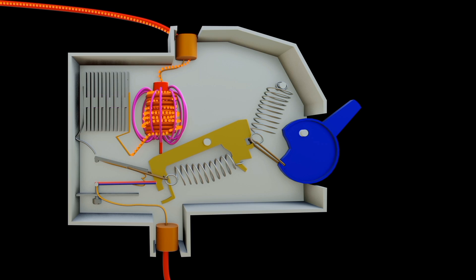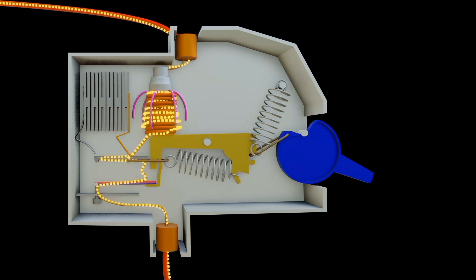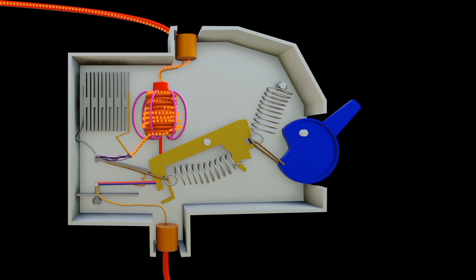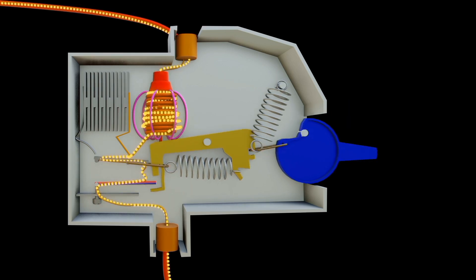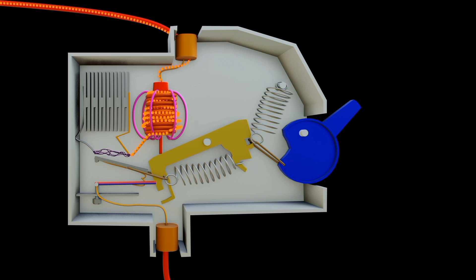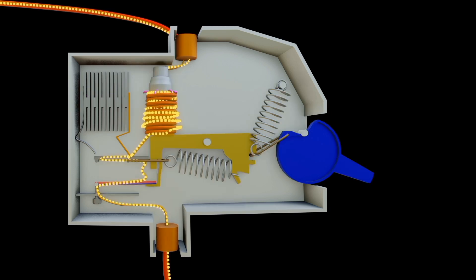While the arc chamber is designed to cool and lengthen the arc, it often contains materials that assist in deionizing and cooling the arc. The arc chamber typically incorporates materials like copper or other alloys with good thermal conductivity. These materials aid in dissipating the heat generated by the arc, helping to cool and extinguish it. Arc chamber does the following: 1. Deionization.